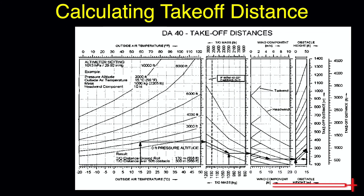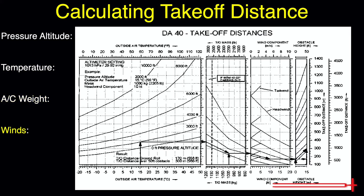We need to know four things before we can find our expected takeoff distance using this chart: pressure altitude, temperature, aircraft weight, and winds.